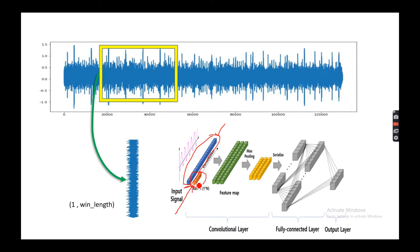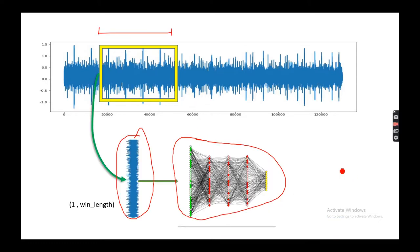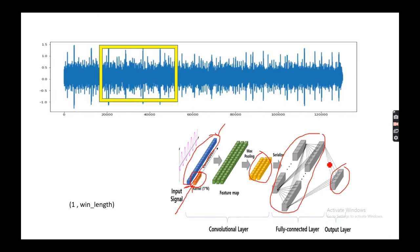I will first do the same convolutional operation as it is done in a conventional way but I'll use a 1D kernel. Then I'll also do the max pooling, there will be some max pooling layer, then there will be fully connected layers and finally there will be output.